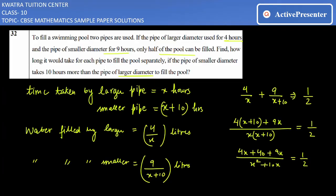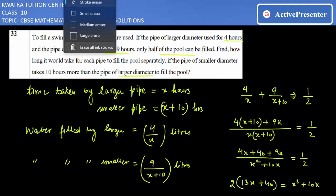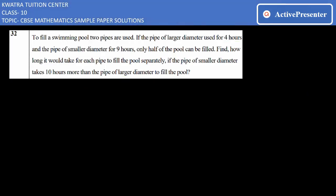Next you have 4x + 40 + 9x over x² + 10x equals half. You can take 2 to the left side, and you have 4x plus 9x, which is nothing but 13x. So 13x + 40 multiplied by 2 equals x² + 10x.